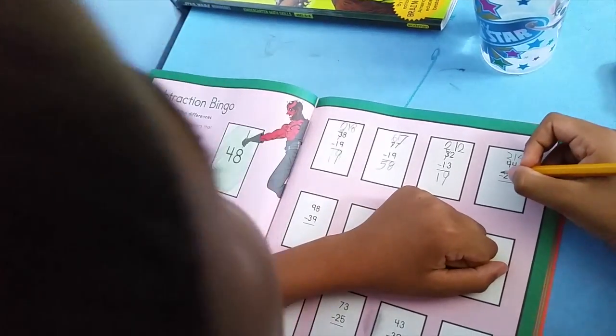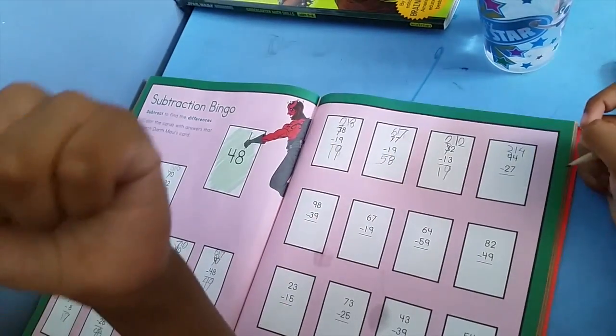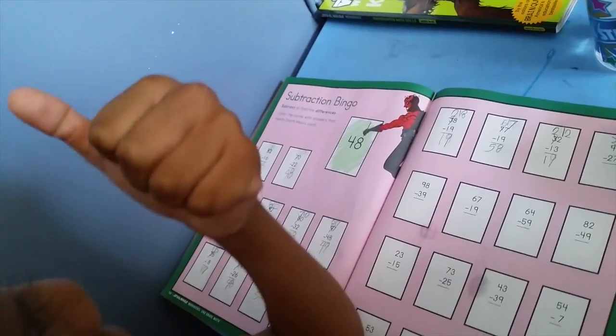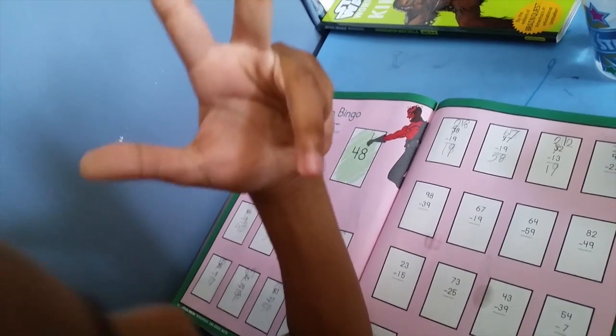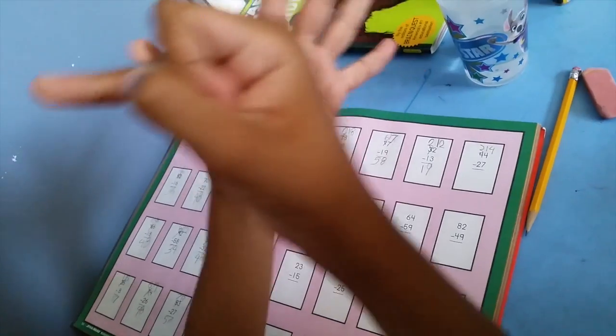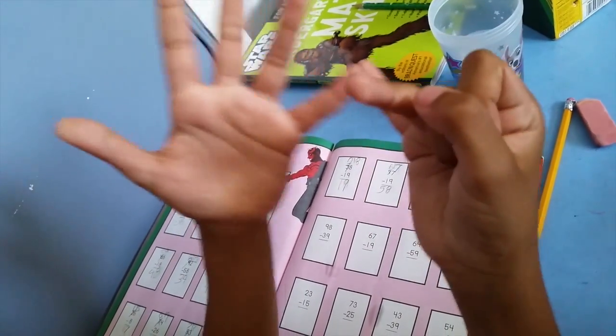Beautiful. 14 minus 7 equals... 8, 9, 10, 11, 12, 13, 14, 1, 2, 3, 4, 5, 6, 7.